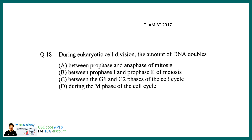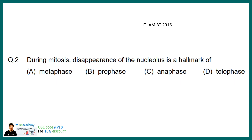During eukaryotic cell division, the amount of DNA doubles — in which phase does this happen? It is in S phase, because DNA replication happens in S phase. This question is very similar to one asked in 2019, where they ask you to correlate a cell cycle phase with a particular function.